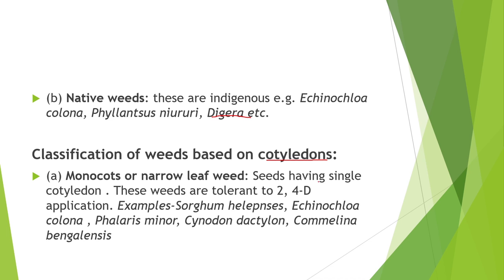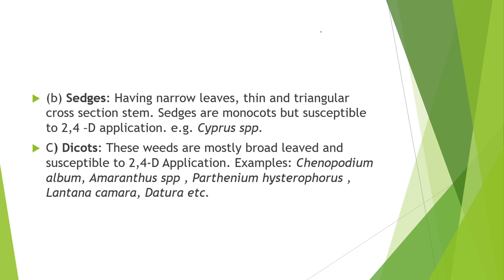Next basis of classification is on cotyledons — may be monocot or dicot. Monocot weeds have narrow leaf size and single cotyledon seeds. Examples are Sorghum halepense, Echinochloa colona, Phalaris minor, Cynodon dactylon, and Commelina benghalensis. Second are sedges — having narrow leaves and thin triangular cross-section stems. Sedges are generally monocots but susceptible to 2,4-D application. The example is Cyperus species. Third is dicot weeds — mostly broad-leaved and susceptible to 2,4-D application. Examples are Chenopodium album, Amaranthus species, Parthenium hysterophorus, Lantana camara, and Datura.